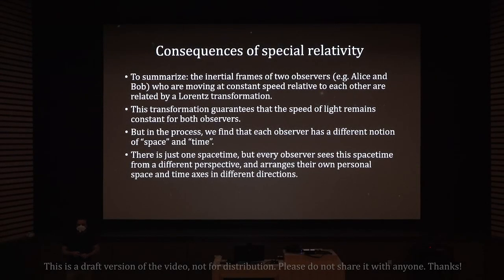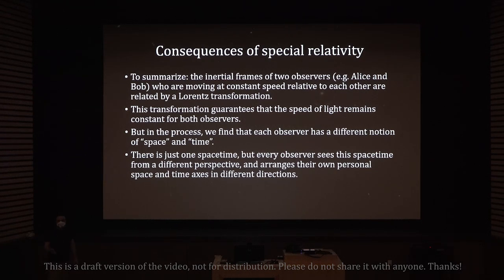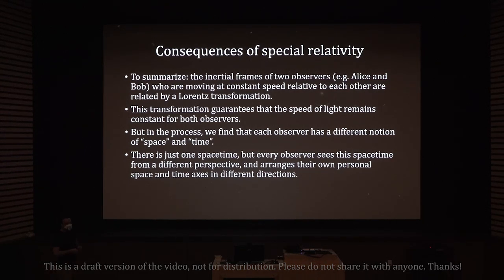To summarize what we learned last time: the inertial frames of two observers, for example Alice and Bob, who are moving at constant speed relative to each other, are related by a Lorentz transformation. This transformation guarantees that the speed of light remains constant for both observers, but in the process we find that each observer has a different notion of space and time.